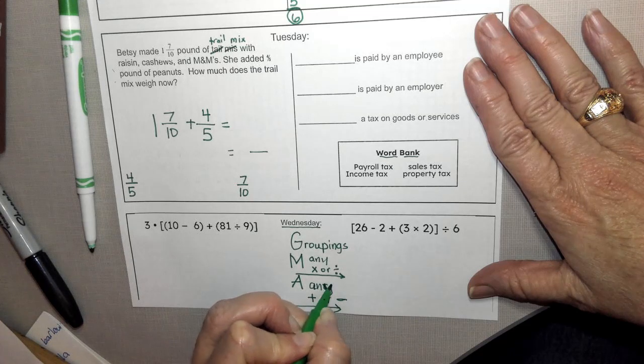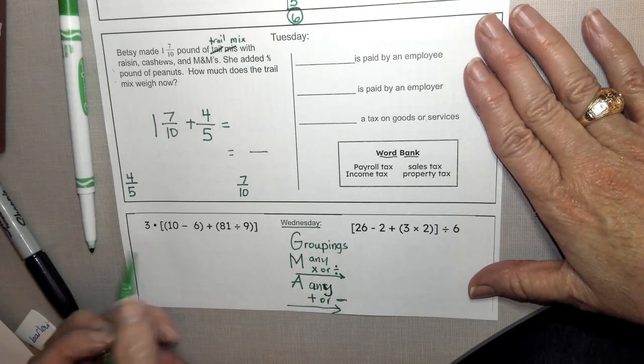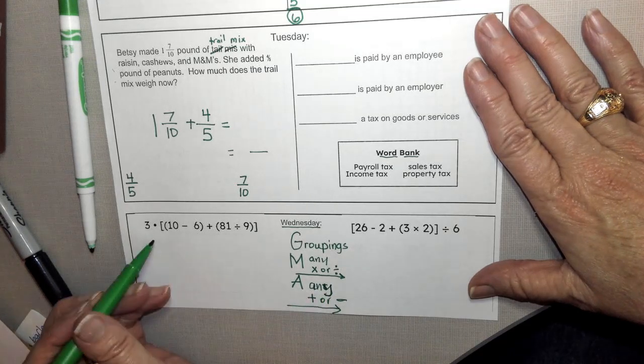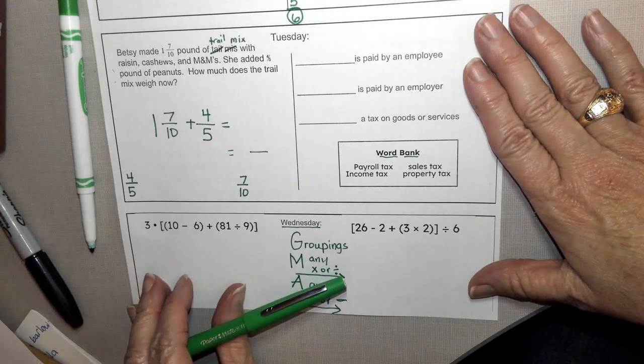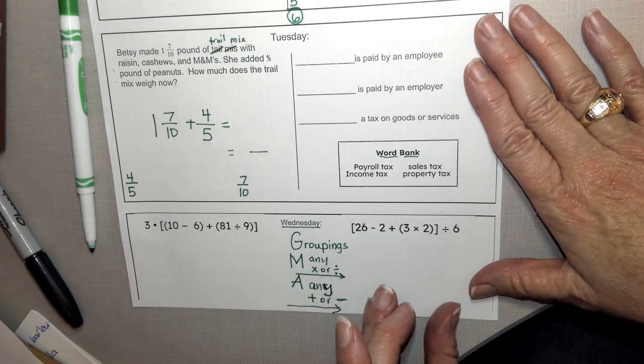Okay, so at this time, what I want you to do is I want you to go through and solve this side for one answer and this side for one answer.